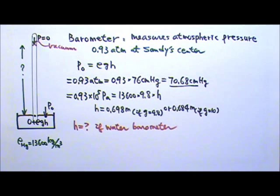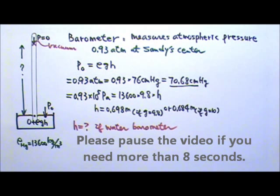Nowadays we know that mercury is poisonous. So perhaps we can just use water to make a barometer. If we use a barometer that is filled with water instead of mercury, how tall would this water column be?